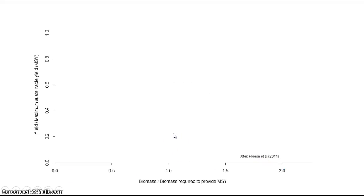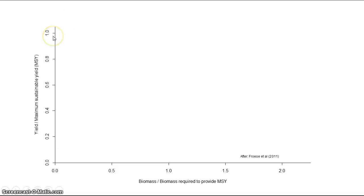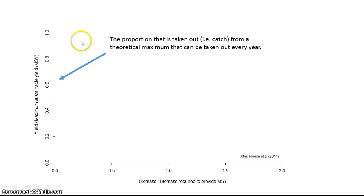Here we have a blank graph with two axes or variables. On the vertical axis we have yield over maximum sustainable yield. This is the proportion of a theoretical maximum that can be taken out of a particular fish stock on an annual basis. 1 equals the maximum proportion that can be caught every year; 0.5 would be half the maximum. So this is the proportion — the catch — taken out from a theoretical maximum that can be taken every year.